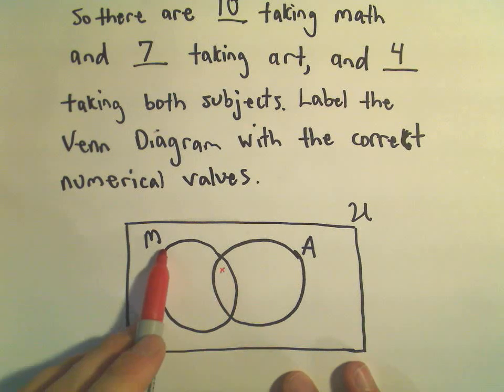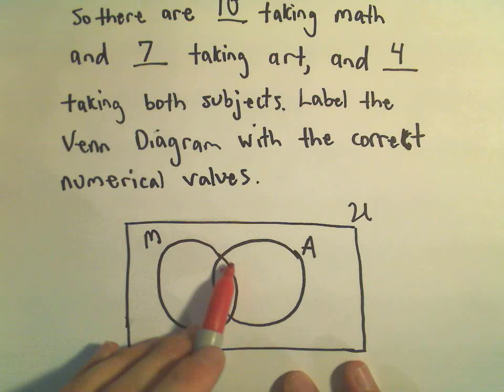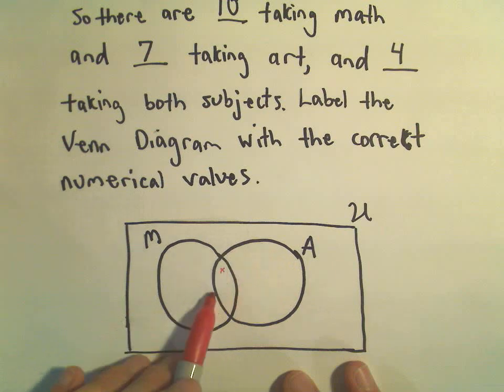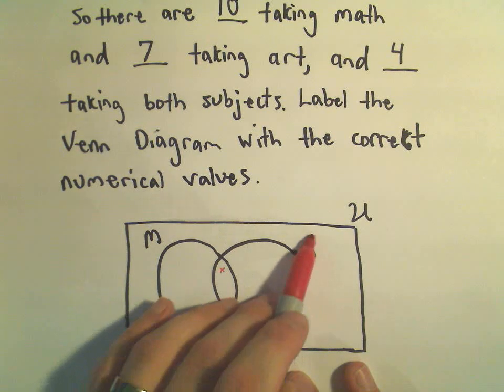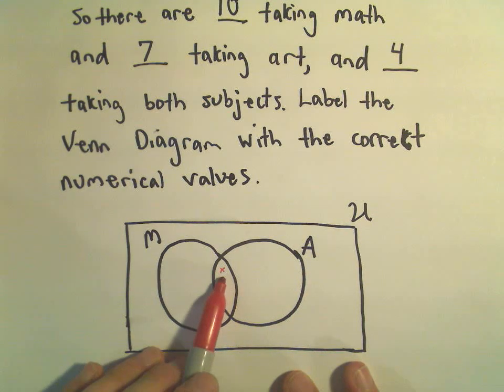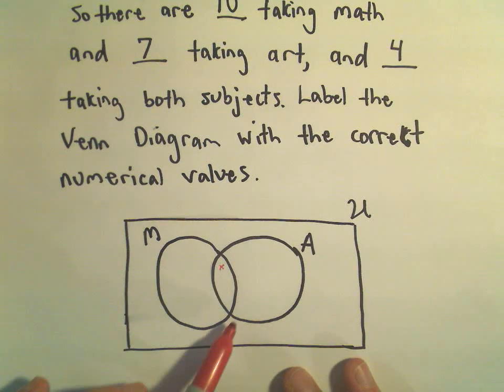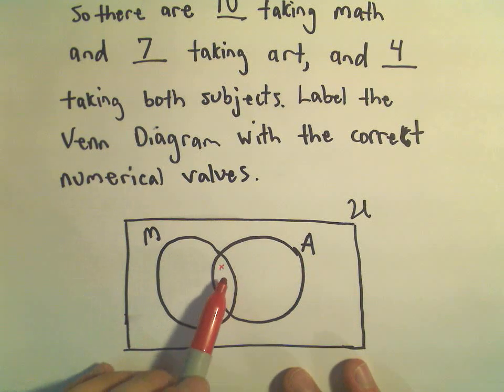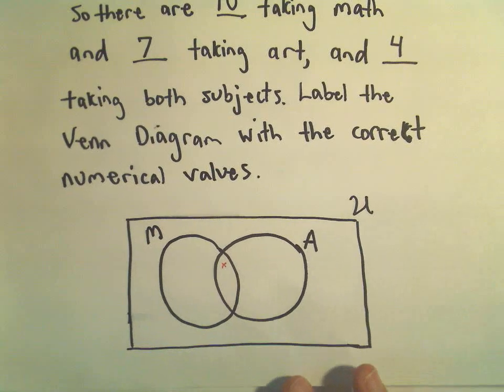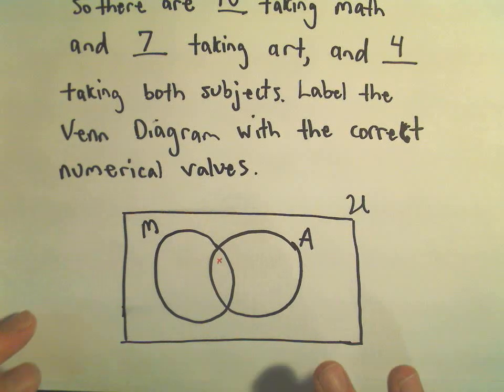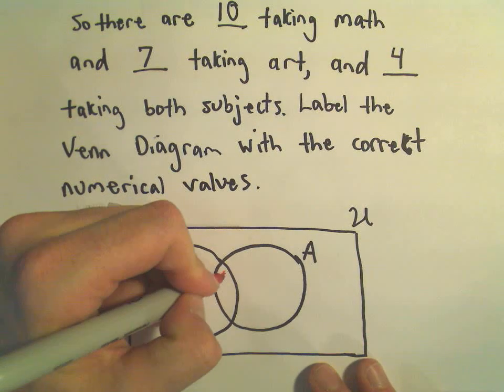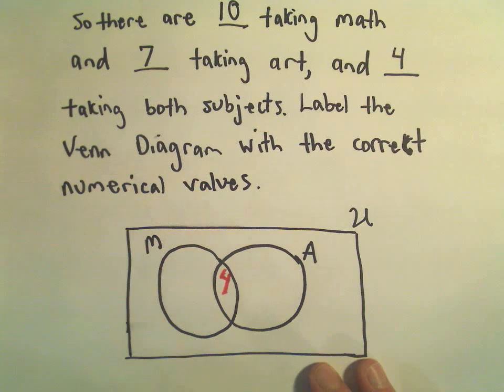Notice that this little region is both inside the circle labeled M. This little circle is going to contain all the people who are taking math. It's also inside our circle A, and that circle A is going to have everybody inside of there that's taking art. Notice if you're where this little X is, you're in the overlap of the M circle and the A circle. That means you have both of these properties in common. That means you're taking both math and art. Well, how many people were taking both math and art? We said that there were a total of four people taking both subjects. So I would just label that little overlap with the number four.